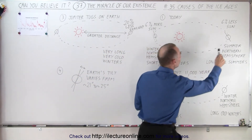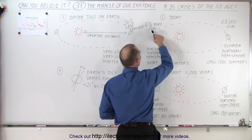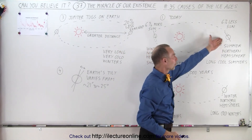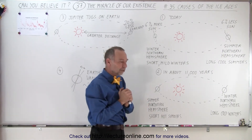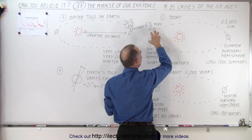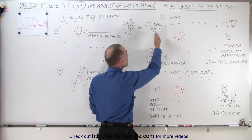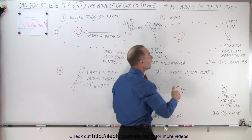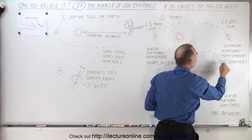Today, we call this the northern hemisphere summer because the earth is tilted towards the sun, and here the northern hemisphere winter because it's tilted away from the sun. The earth also has an elliptical orbit, and it turns out that currently we're closer to the sun when it's winter in the north hemisphere and farther away from the sun when it's summer in the north hemisphere.